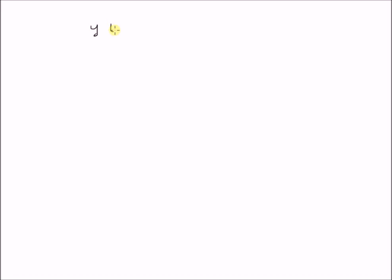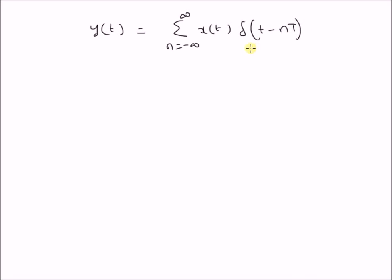Now let us look at an example. Given the system y(t) equal to the sum from n equals minus infinity to plus infinity of x(t) times delta(t minus nT), where delta is the unit impulse signal. Given this system, we want to verify whether it is linear or not and also whether it is time invariant or not.